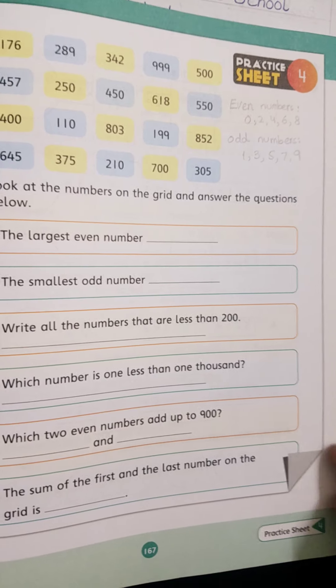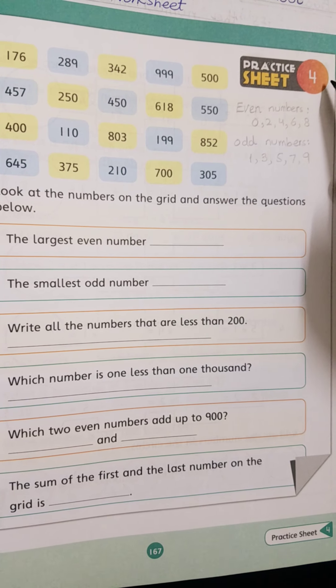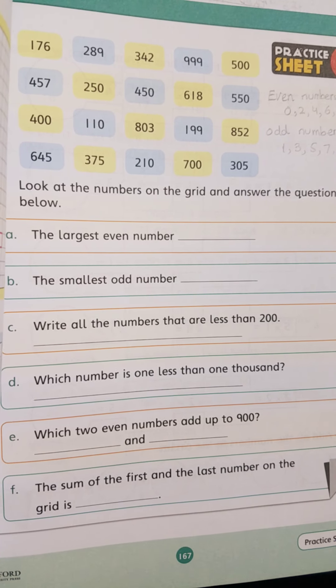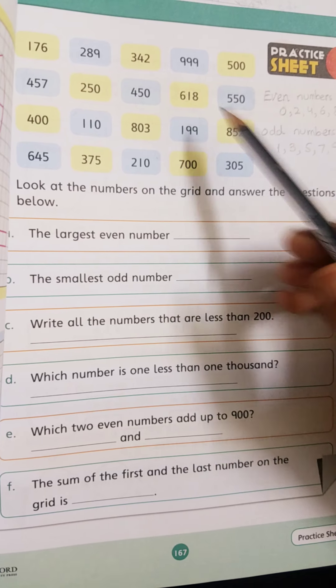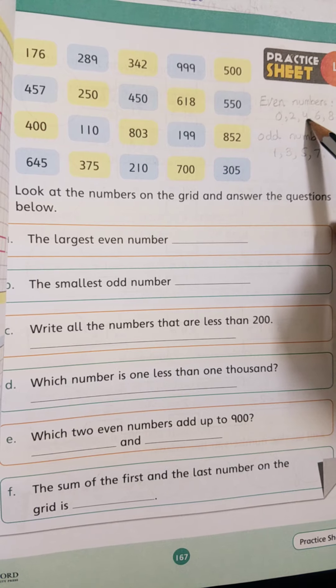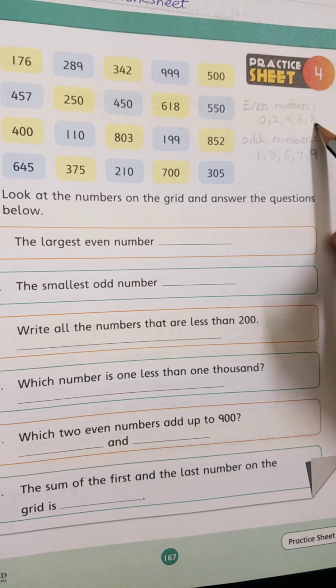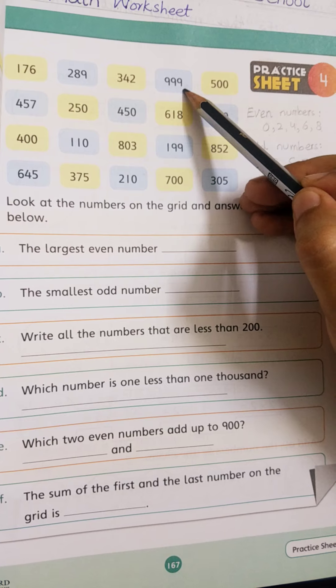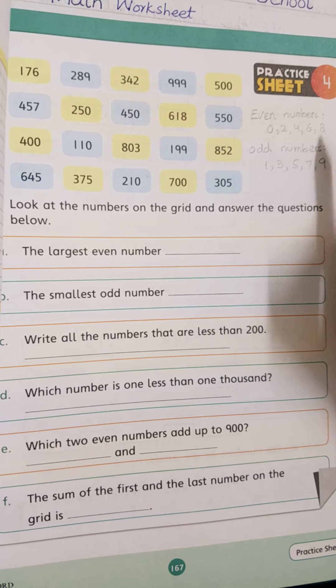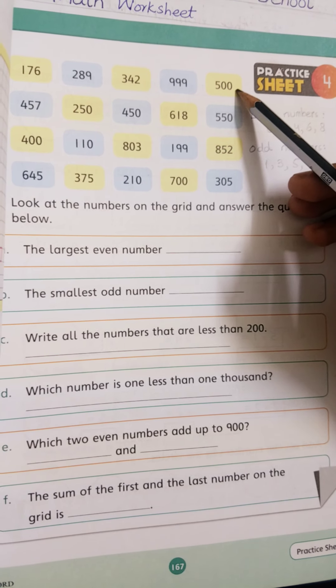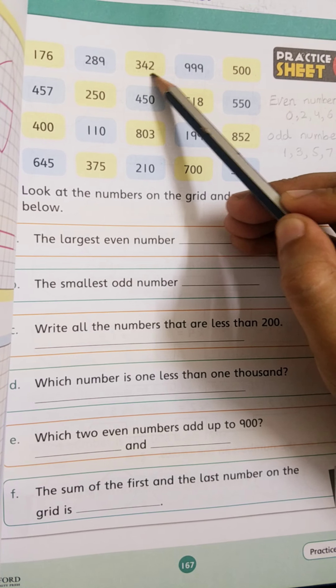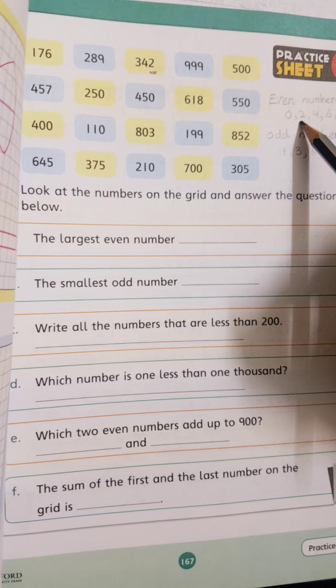Page number 167, practice sheet 4. Even numbers or odd numbers, different numbers given. Remember that even numbers are those which end with 0, 2, 4, 6, 8. Those numbers are even numbers. For example, 342, last place, ones place is 2. 2 is even number, so this whole number is even.